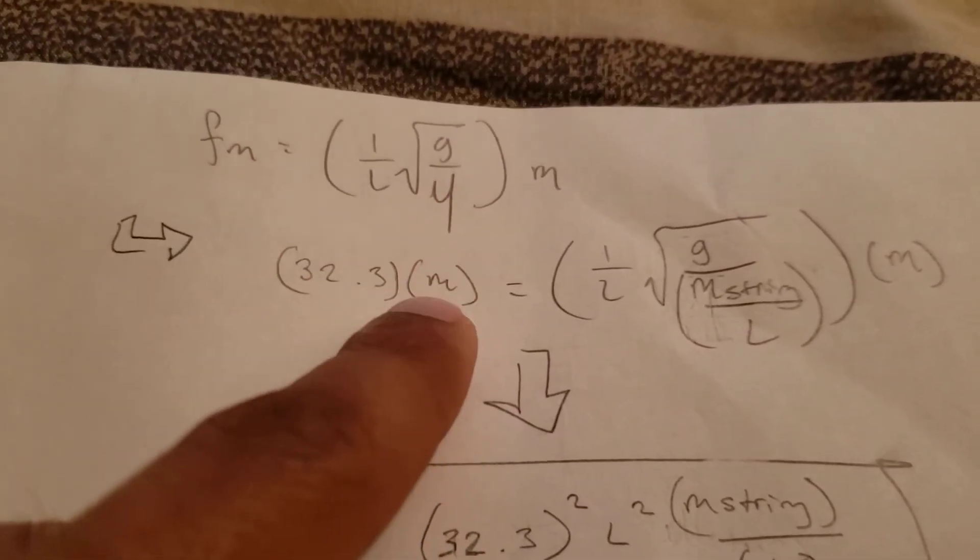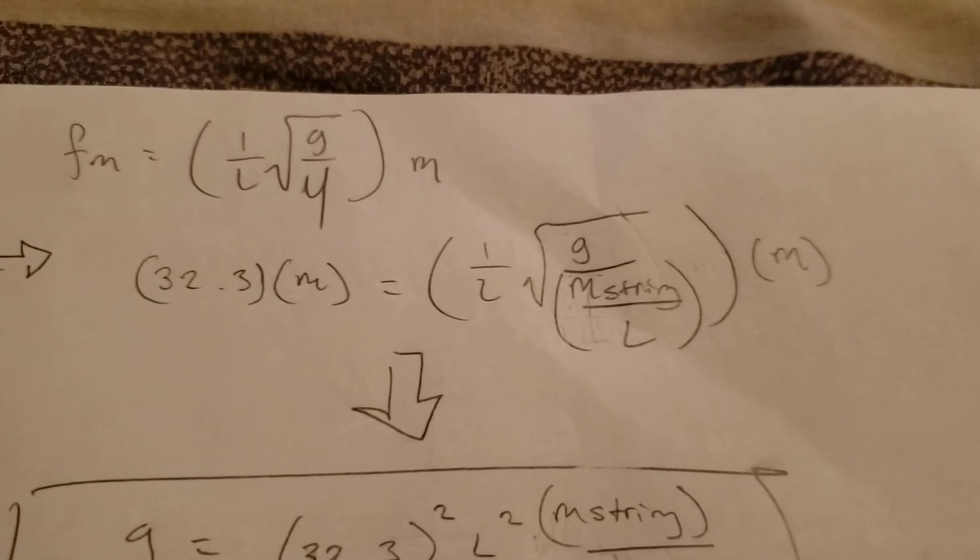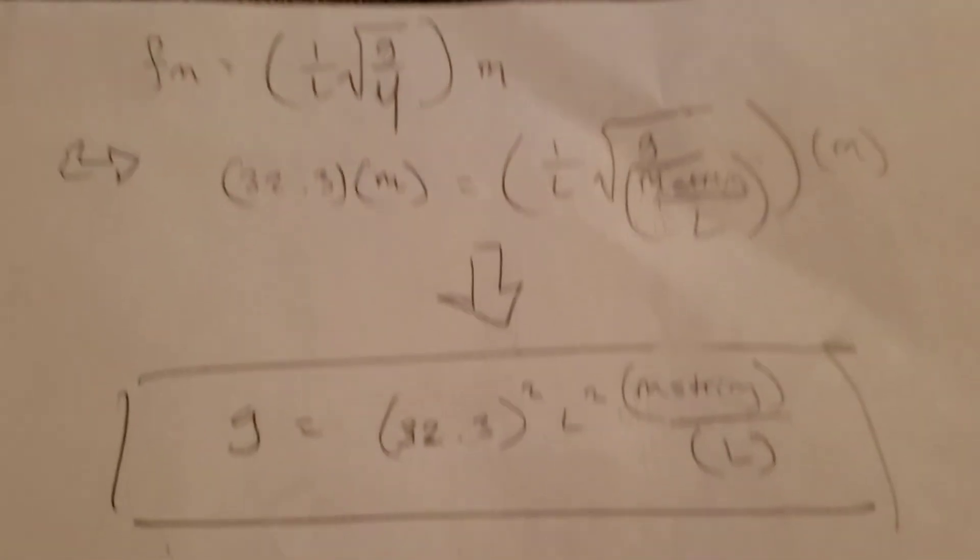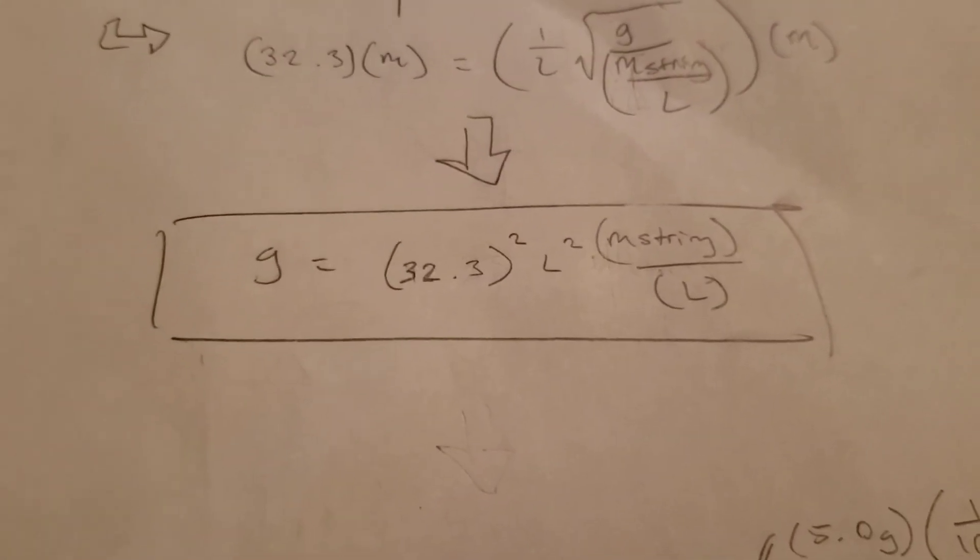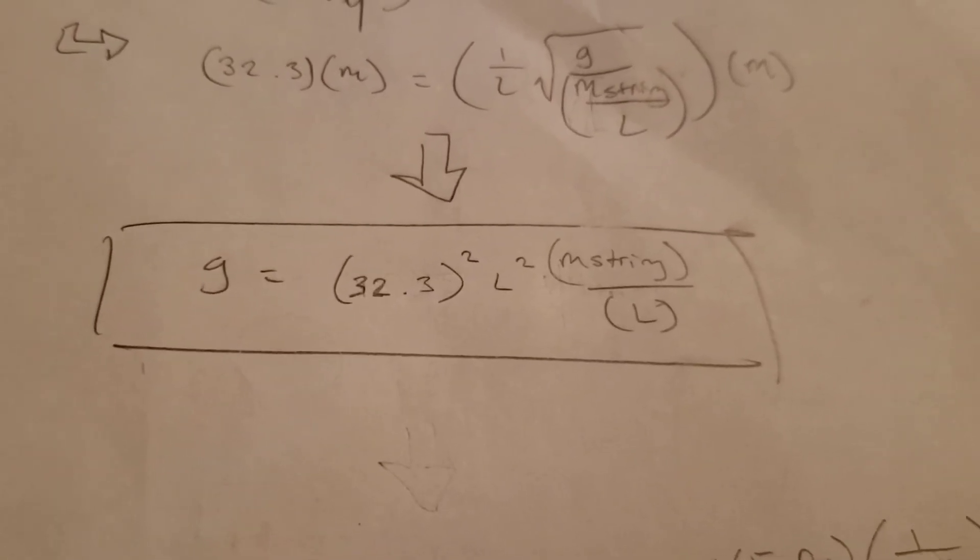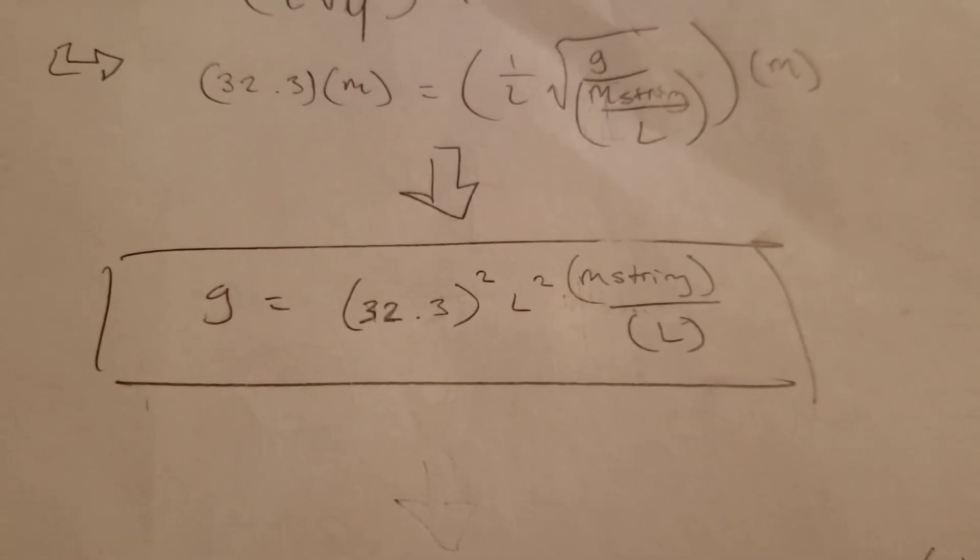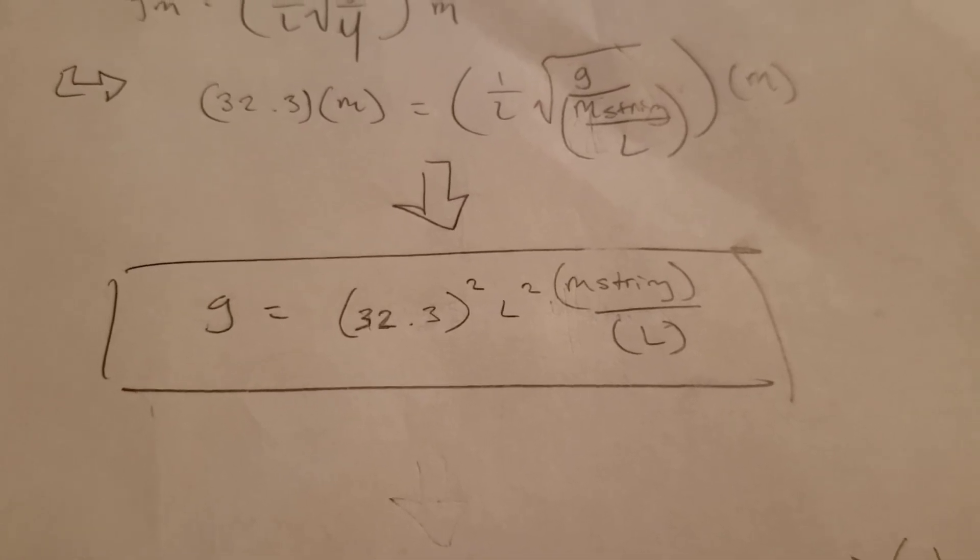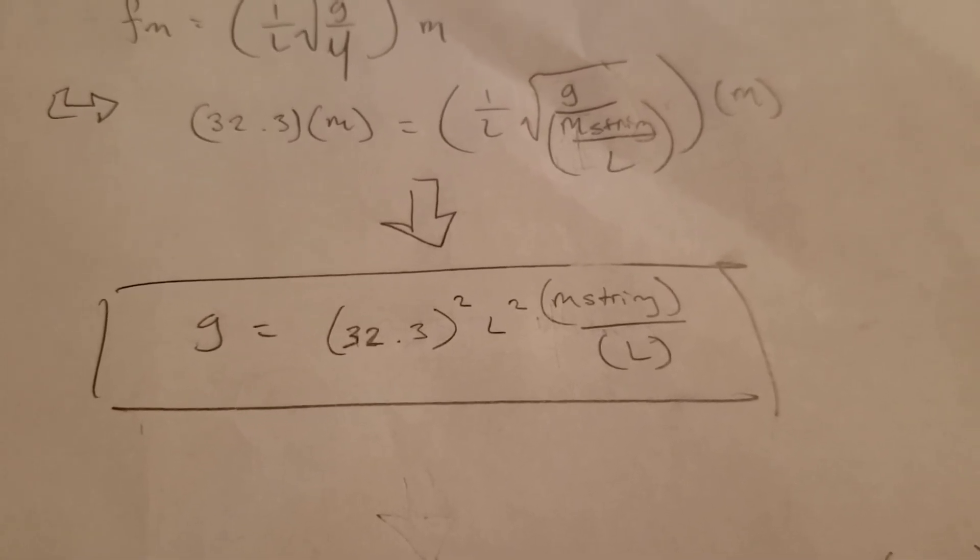And, as you can see, I broke down mass per unit length into its components here. And then, if you do some algebra with that and isolate for G, which is what we want, you get this. You get G is equal to the slope of the line squared times the length squared times mass of the string over the length.